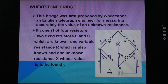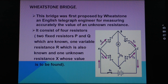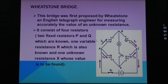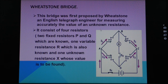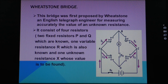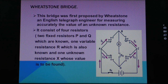First of all, we come to Wheatstone Bridge. This bridge was first proposed by Wheatstone, an English telegraph engineer, for measuring accurately the value of unknown resistance. It consists of four resistors: two fixed resistors P and Q, which are known; one variable resistance R, which is also known; and one unknown resistance X, whose value is to be found.